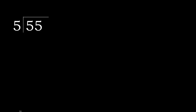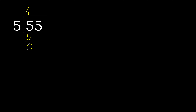55 divided by 5. 5 is not less, therefore start with 5. 5 multiplied by which number is nearest to 5 but not greater? 5 multiplied by 2 is 10 — 10 is greater. 5 multiplied by 1 is 5. 5 minus 5 is 0.